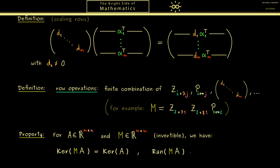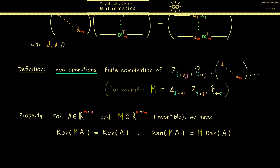Row operations will change the range of the matrix, but not so much that we can't calculate it. We can still calculate the range of M times A from the original range of A by multiplying with matrix M — the range of M times A equals M applied to the range of A, which is the set of all elements of the form M times y where y comes from the range of A. It's not hard to prove this equality, nor is it hard to prove that the kernel does not change. This is a good exercise: try to write down the proof. This fact will be used a lot in the next videos when we talk about Gaussian elimination and the solution set of systems of linear equations.